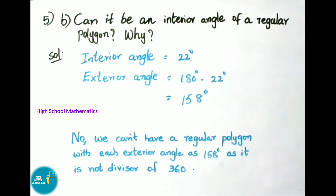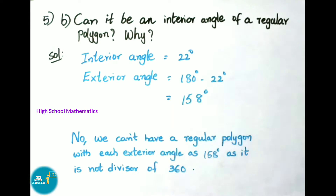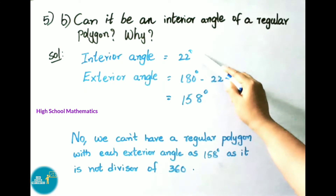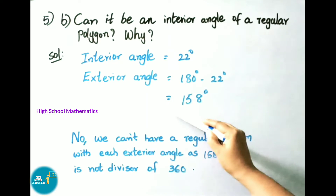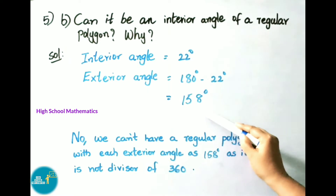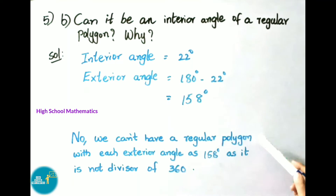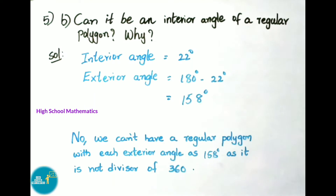Question 5B: can 22 degrees be an interior angle of a regular polygon? The corresponding exterior angle would be 180 minus 22 equals 158 degrees. No, we cannot, as 158 is not a divisor of 360 degrees. Therefore 22 degrees cannot be an interior angle of a regular polygon.